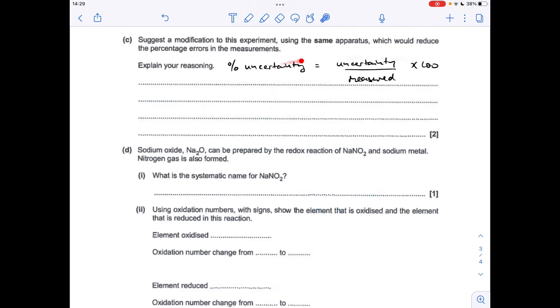Moving on to part C, notice I've copied the equation out again for calculating percentage uncertainty. So we're not allowed to change the apparatus, so we can't use more accurate apparatus with a low uncertainty. So what we need to do is increase the amount measured, which will obviously drop the uncertainty if you're dividing by a bigger number. So what we could say is just use a greater amount of sodium oxide. And the knock-on effect of that is it will create a larger temperature change, which again, when you do the temperature uncertainty, percentage uncertainty calculation, if you've got a larger temperature, again, you're dividing by a bigger number. So that will also decrease the percentage uncertainty.